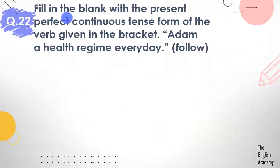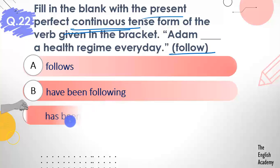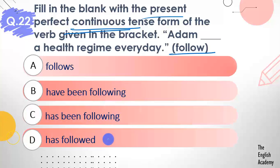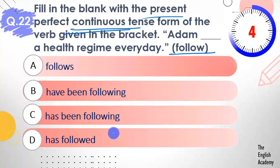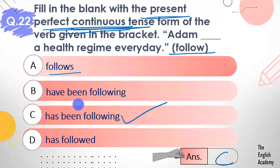Question number 22: Fill in the blank with the present perfect continuous tense form of the verb given in brackets — 'follow'. Adam ___ a health regime every day. Options: A) follows, B) have been following, C) has been following, D) has followed. The answer is option C — has been following. 'Follows' is simple present, 'have been following' is past perfect continuous, 'has followed' is present perfect tense. We need present perfect continuous tense, which is option C.